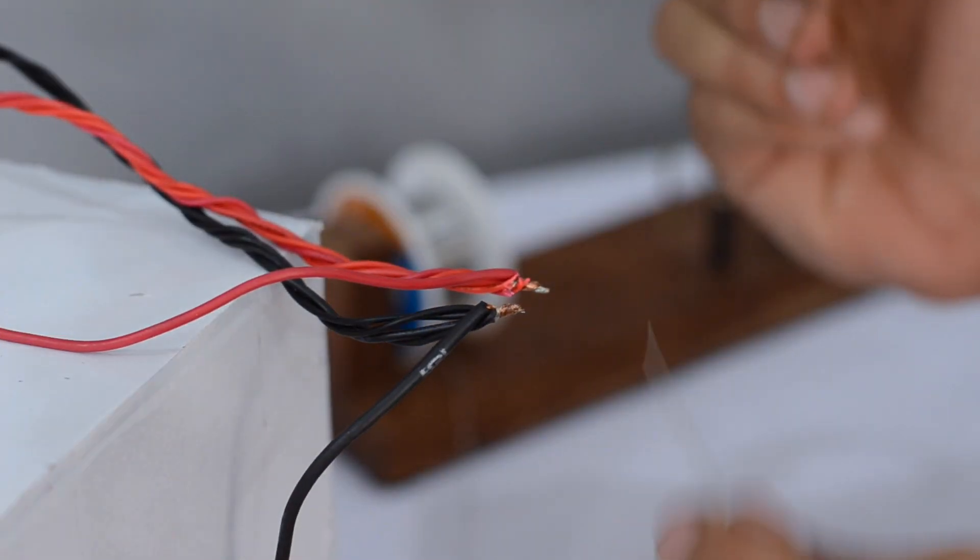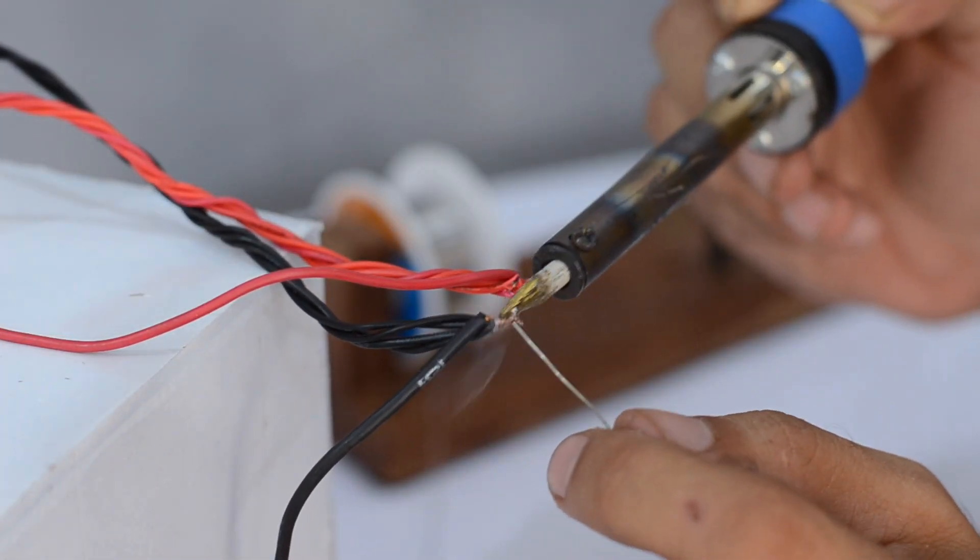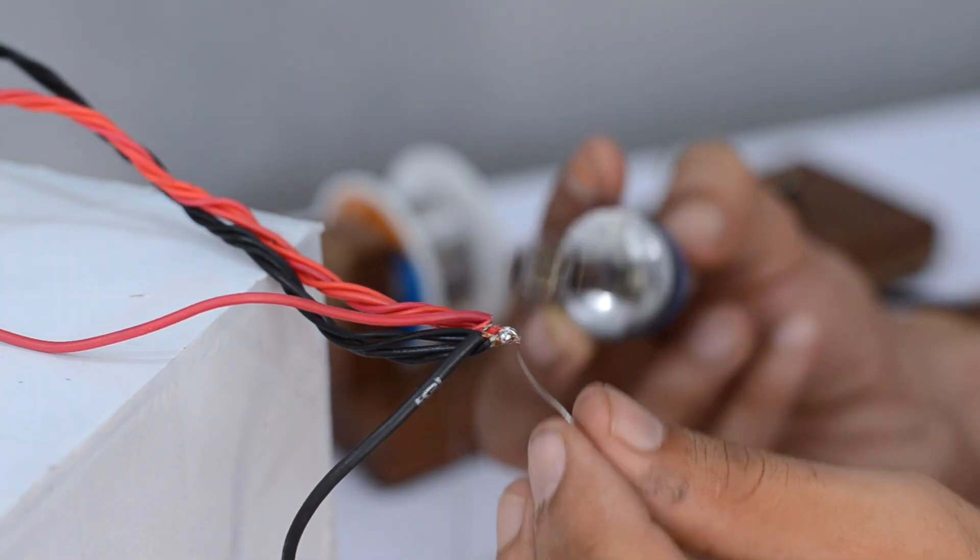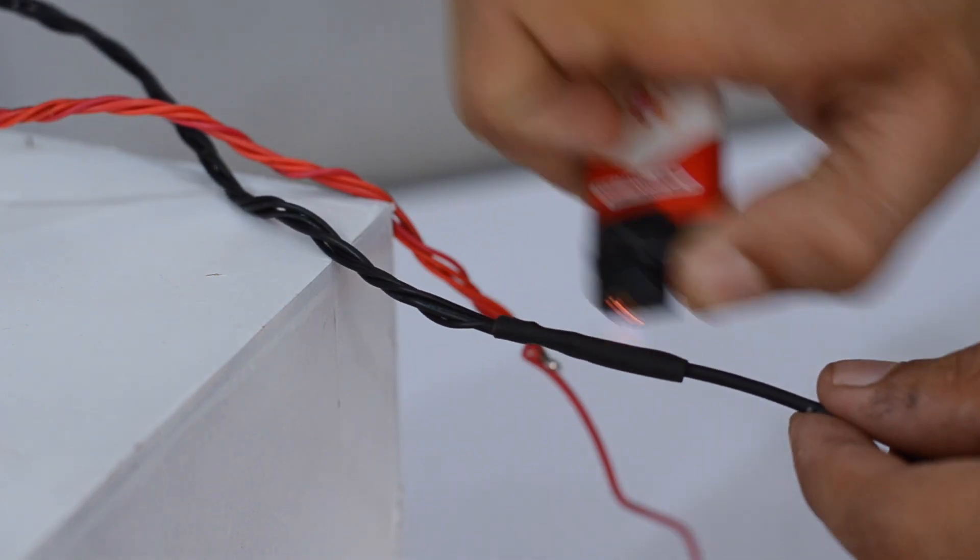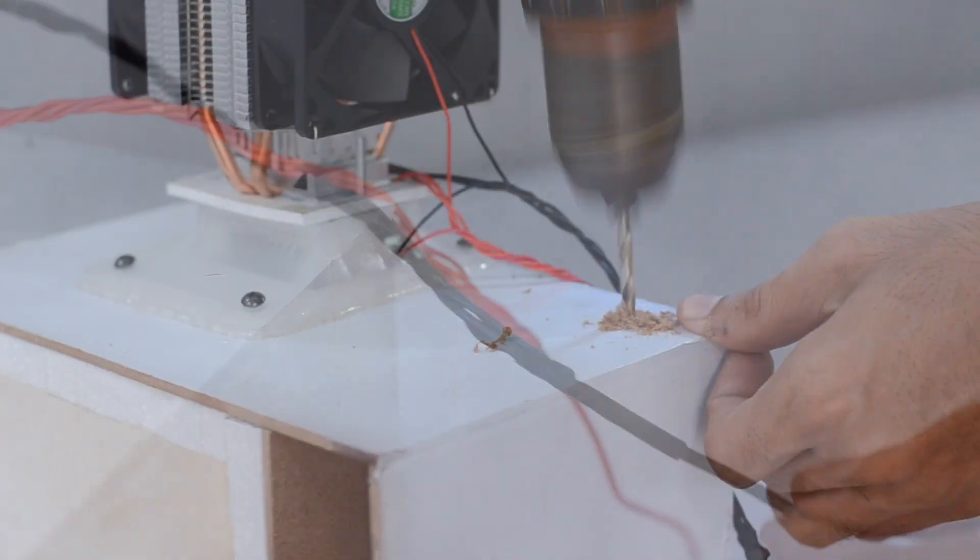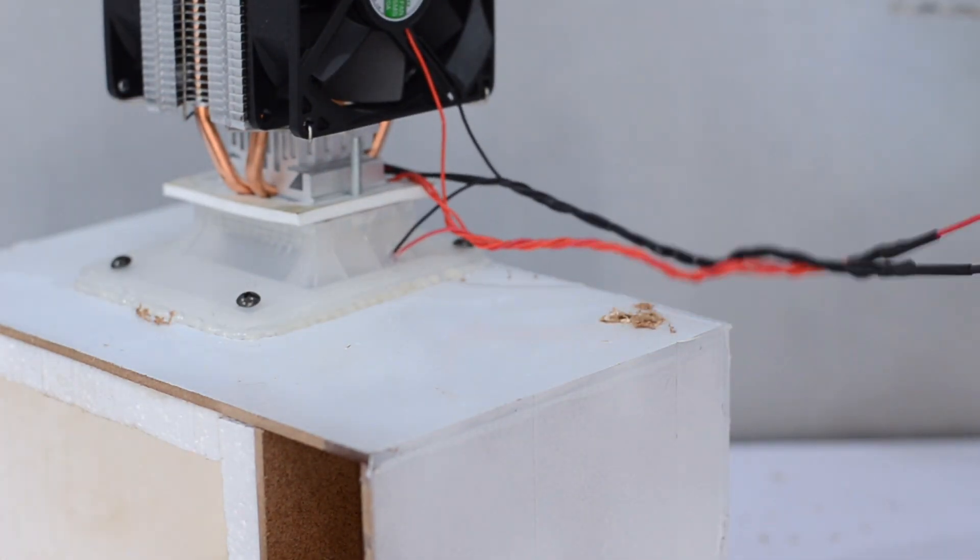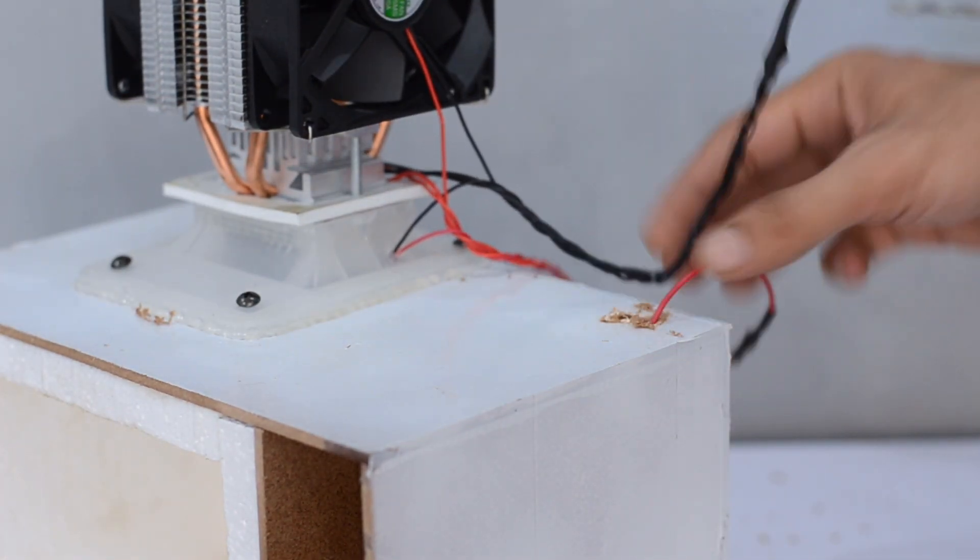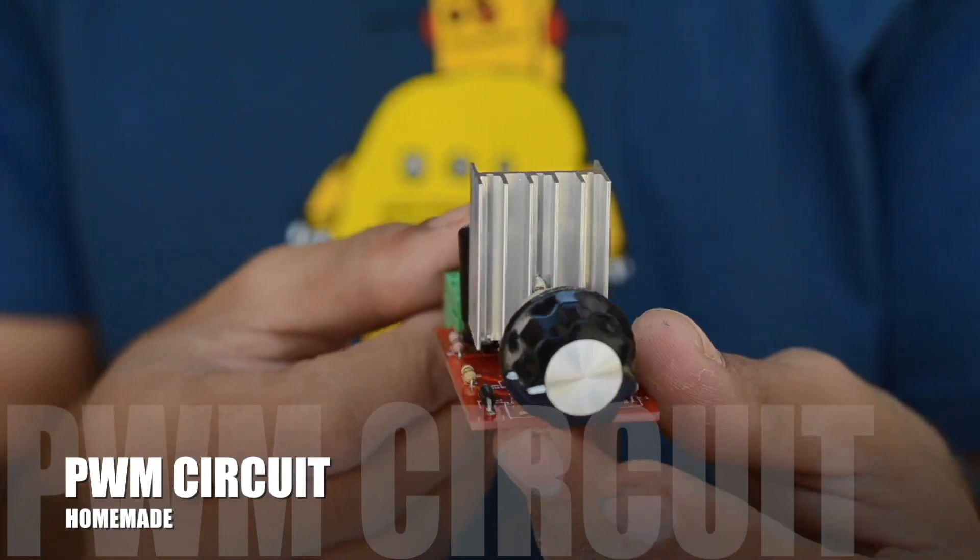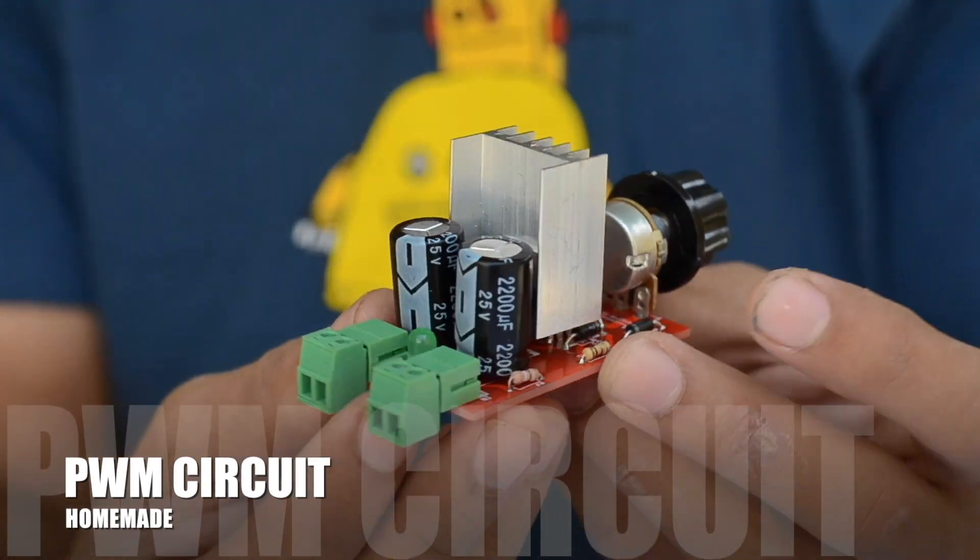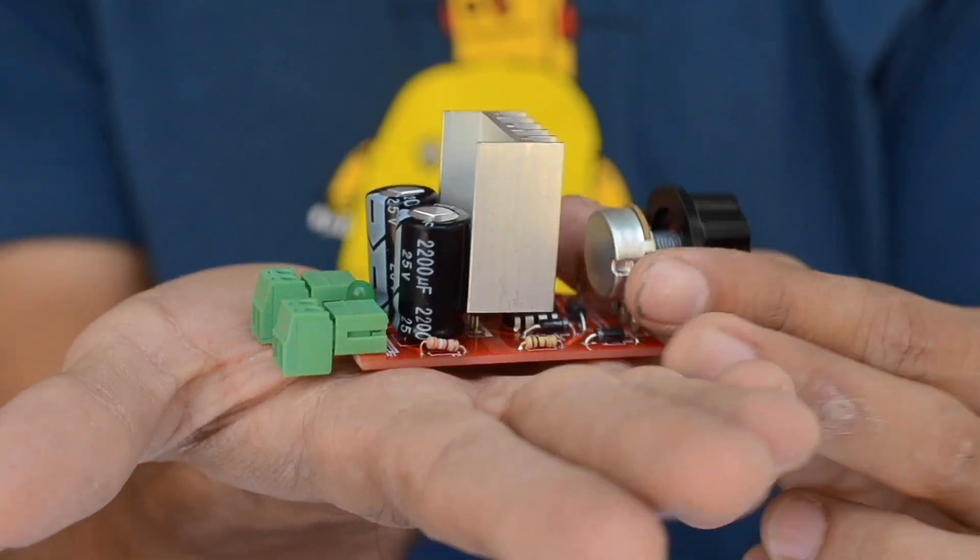To drive this Peltier unit, all we had to do is supply 12V across the red and black wires. So I have soldered all the red ones together and I have done the same with the black ones. The wires are then extended to the pulse width modulation unit that I have designed to regulate the amount of temperature that we are going to maintain inside the freezing unit.